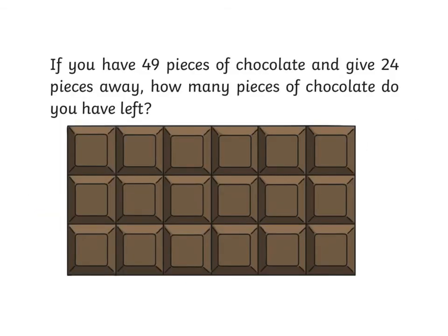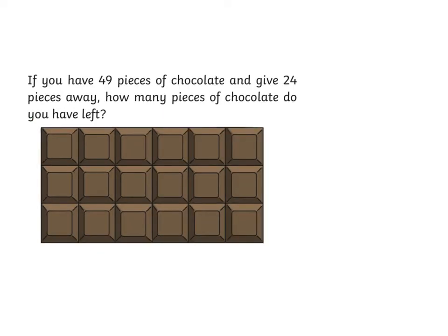What about this problem? If you have 49 pieces of chocolate, and give 24 pieces away, how many pieces of chocolate do you have left? You may have already noticed 'how many do you have left?' — that tells us that it's going to be a subtraction problem. So for this problem, we would go 49 take away 24, and find out the missing value at the end.